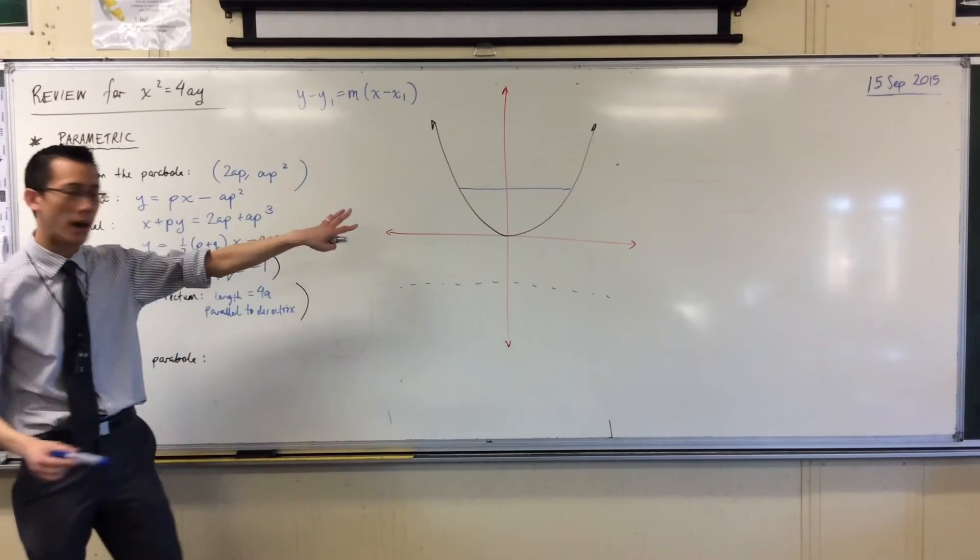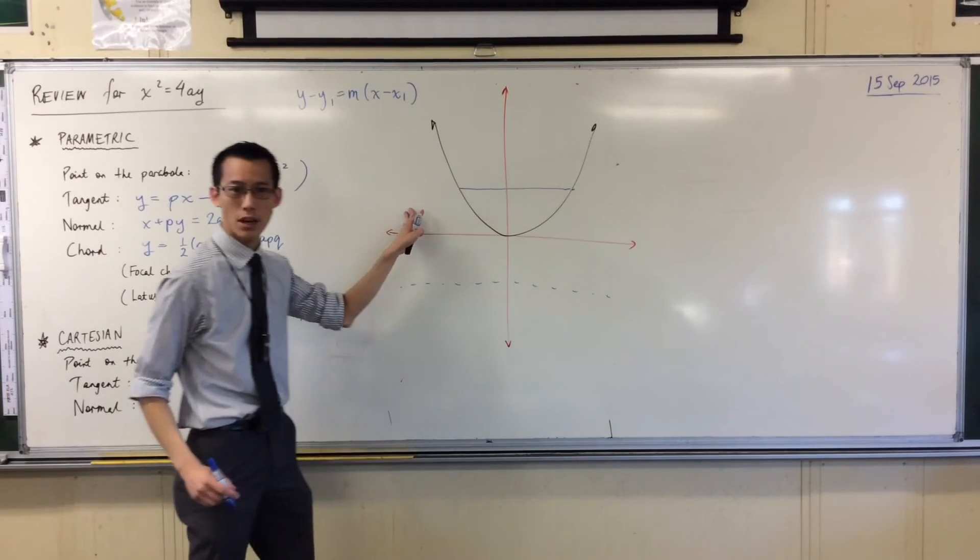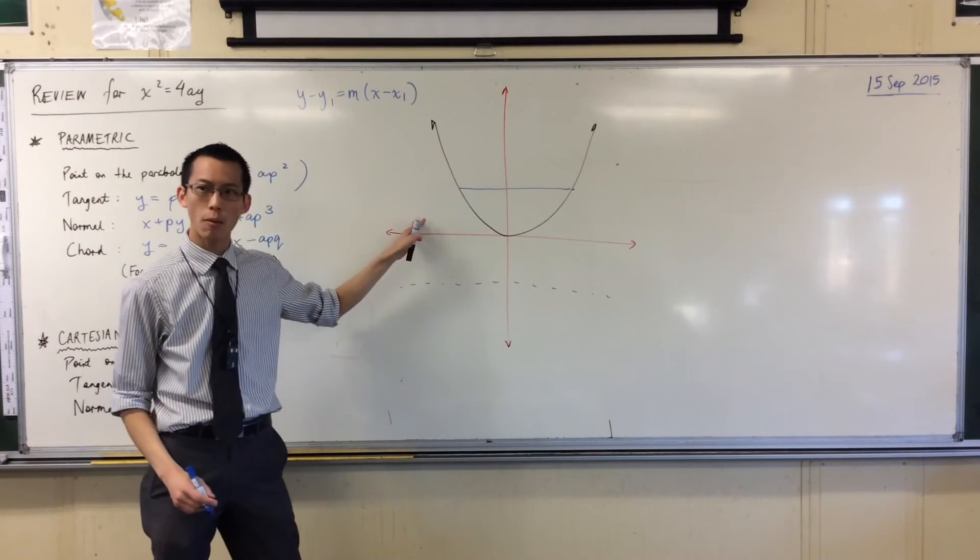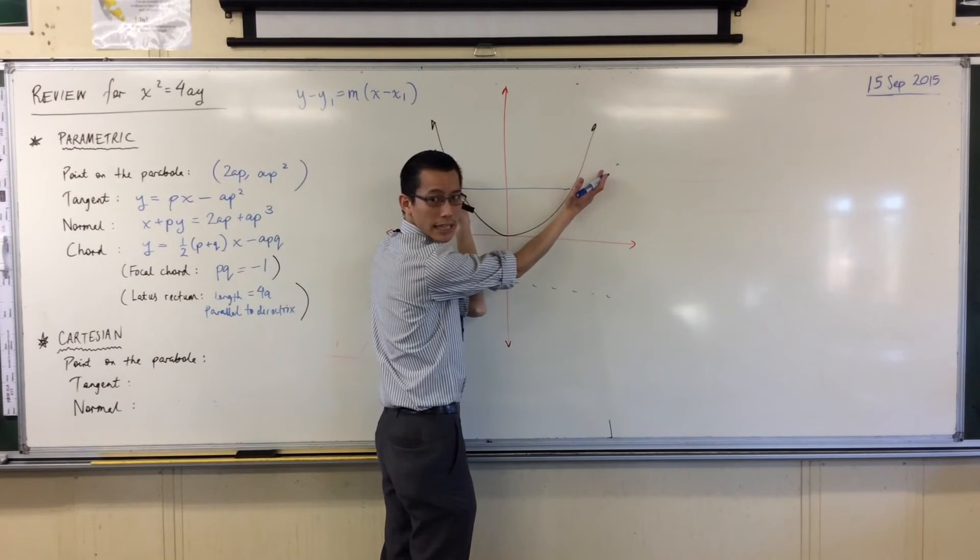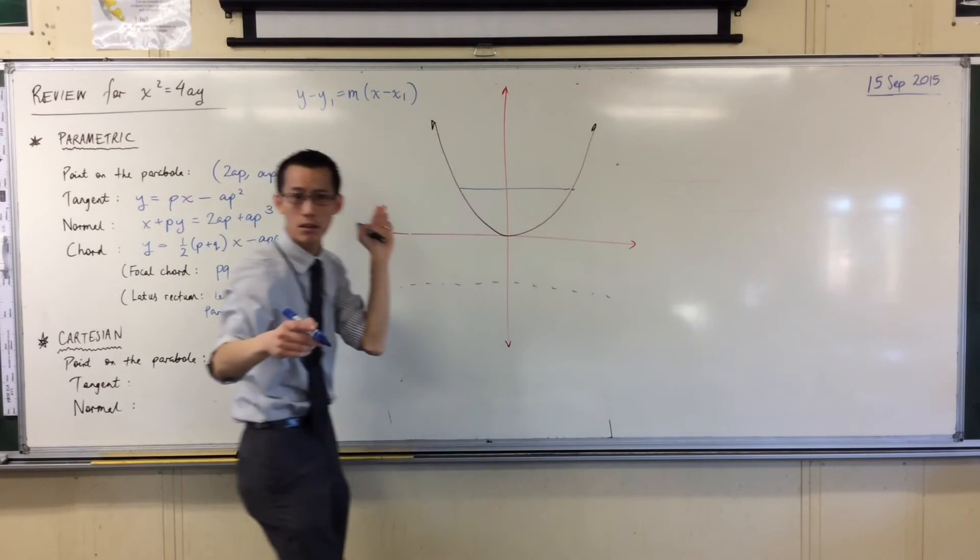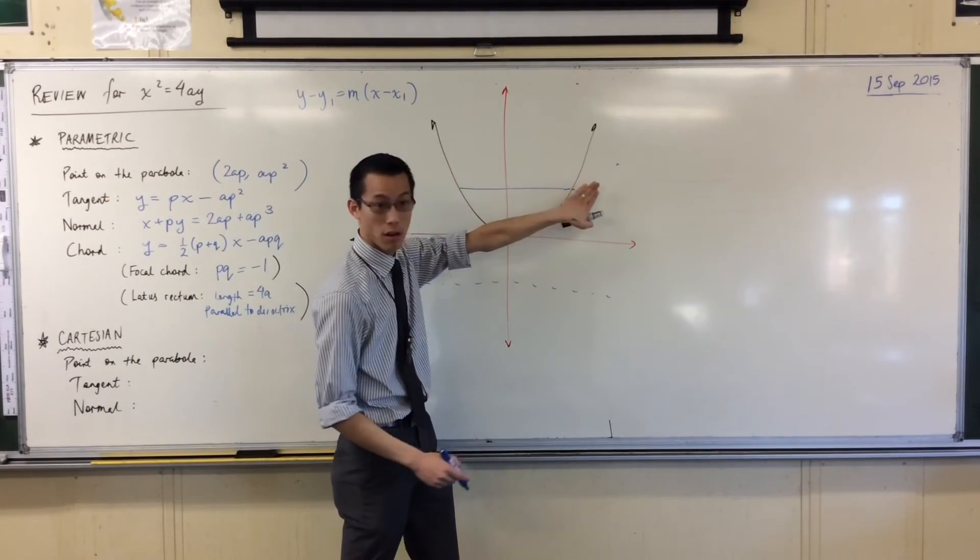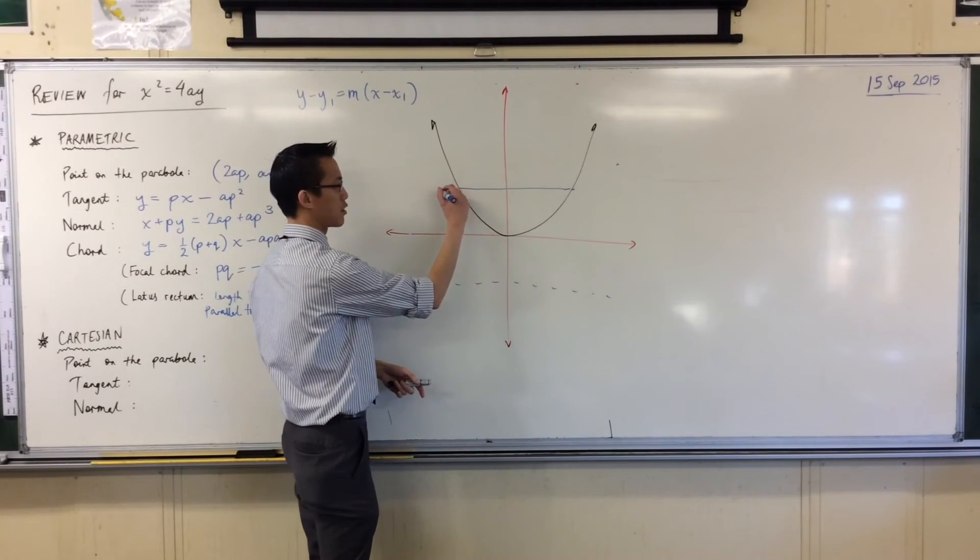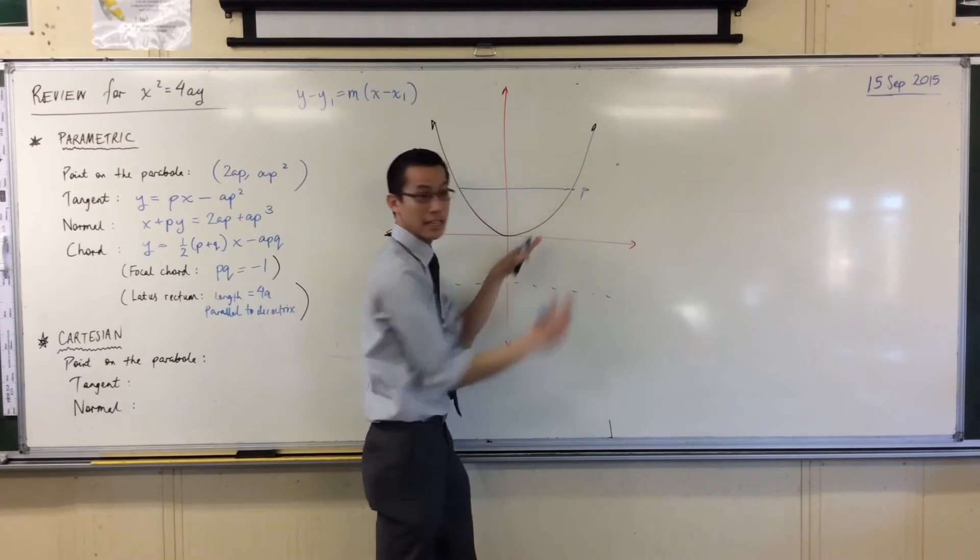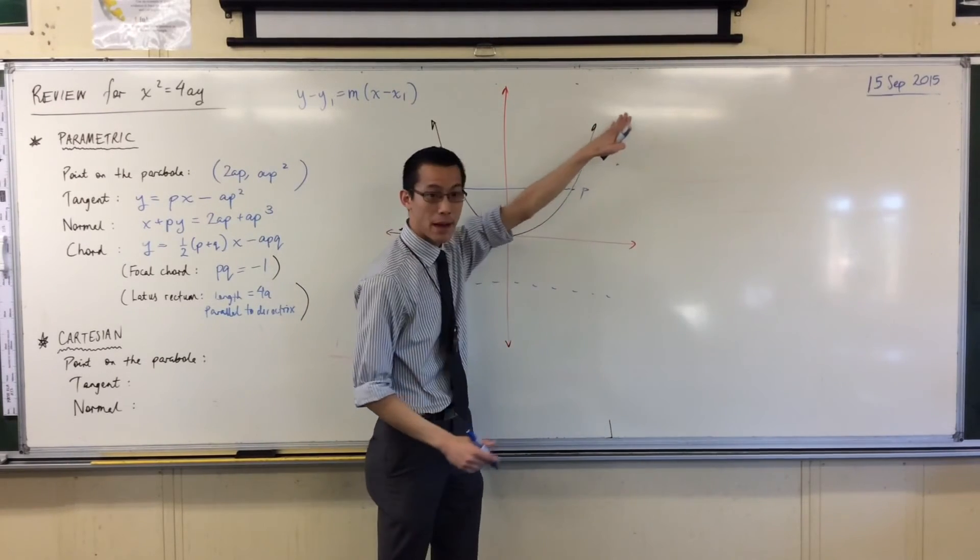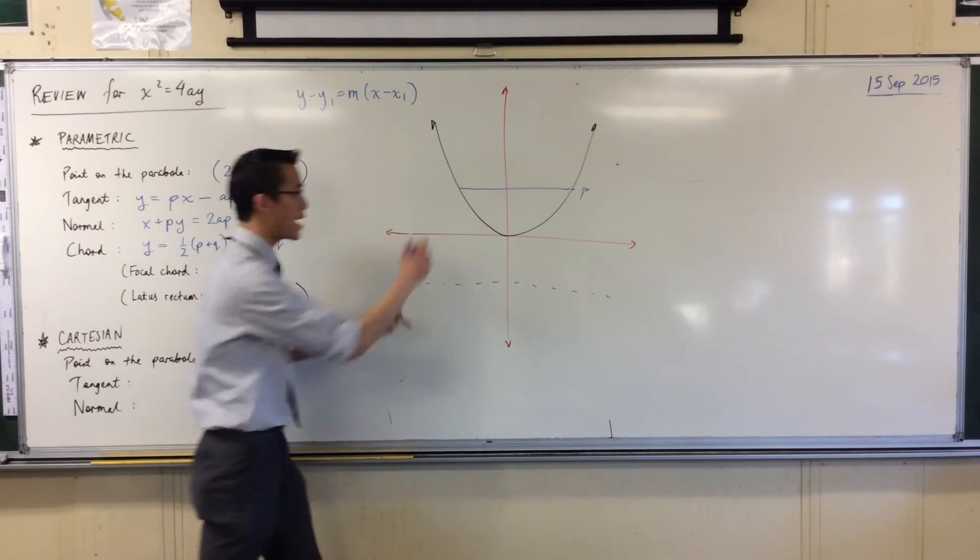Now, because parabolas are symmetrical shapes, do you notice when we think about the gradients at these endpoints, here and here, what could you do about the gradient of the tangent here, what kind of relationship do they have? They are reflections of each other. In fact, if one has a gradient of P, I'll make this one P because it's increasing, it's going up at that rate. Because of the exact reflection, the gradient is minus P.